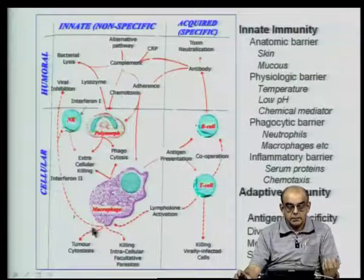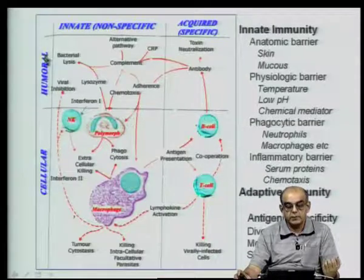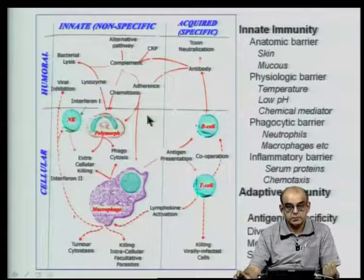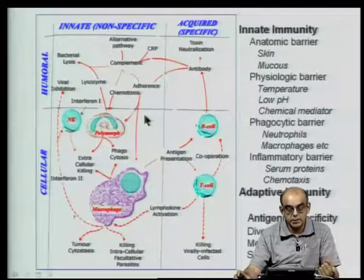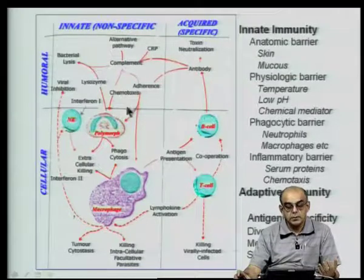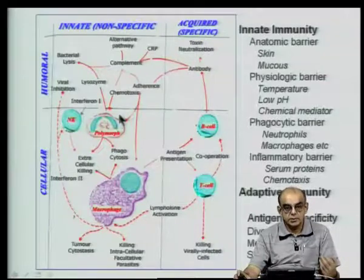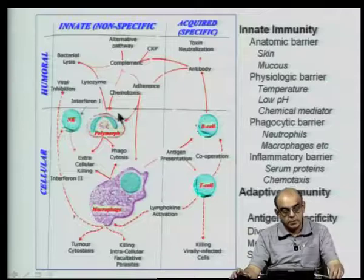Considering the cellular immune system, you also have a humoral immune system consisting of various kinds of molecules. When one looks at evolution, you have to look at what sort of molecules or cells began very early on. To recapitulate, what are the aspects we need to consider when studying evolution?